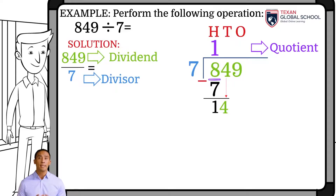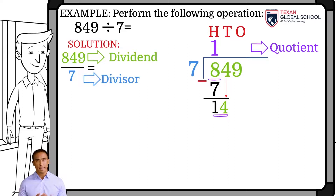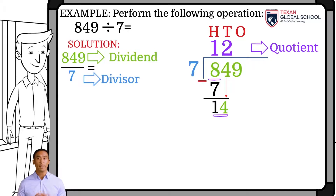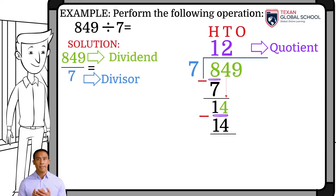Drop the next digit 4 to get the new dividend and repeat the process. Since the first digit 1 of the dividend is less than the divisor 7, take the next digit as well. Hence, the divisor 7 is contained 2 times in the dividend 14, which is placed in the quotient above the galley in the 10's column. Now, multiply this 2 of the quotient by the divisor 7, and place the result 14 below the dividend. Subtract 14 from 14, and the 0 is placed in the same 10's column.